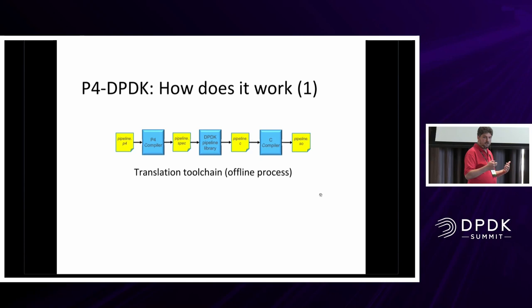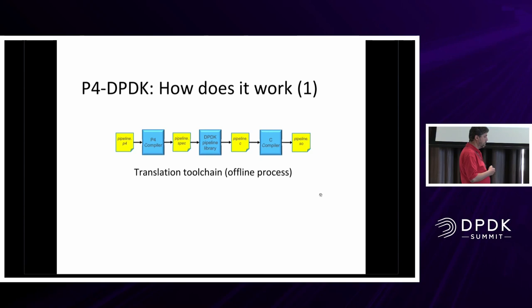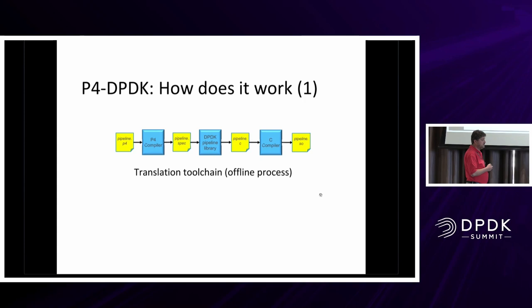Why do we generate C code? For performance reasons. Previously we executed instructions directly, essentially calling a function pointer for each instruction, but that was very slow because the C compiler couldn't see the whole program and optimize it together. So we ended up inlining the functions associated with instructions into a big C file. Now GCC, Clang, or any other C compiler is much better suited to optimize and compile that C code. We get a shared object — a binary — at the end of this toolchain.